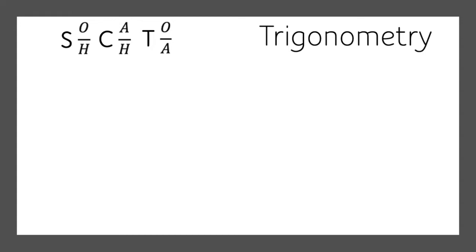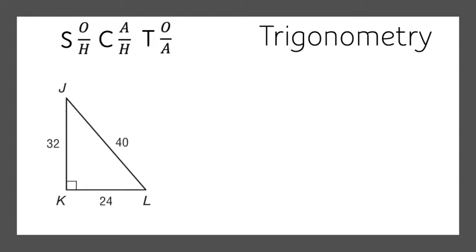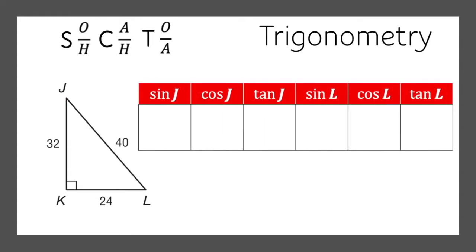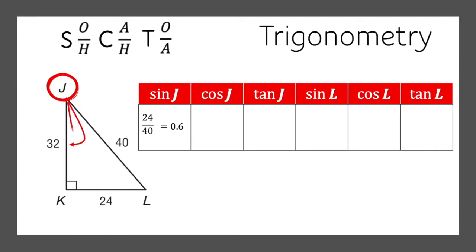Let's give this a go with a real triangle. Here's a triangle with sides 32, 40, and 24. We're going to find the cosine, sine, and tangent of J, and the sine, cosine, and tangent of L. Starting with J: the sine of J is opposite divided by hypotenuse, that's 24 over 40, which is about 0.6. The cosine of J is adjacent divided by hypotenuse, so 32 divided by 40, which is about 0.8. And the tangent of J is opposite divided by adjacent, 24 over 32, about 0.75.